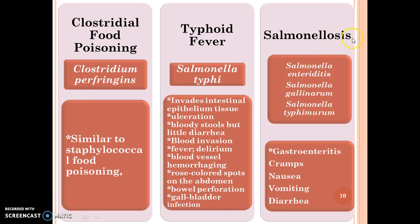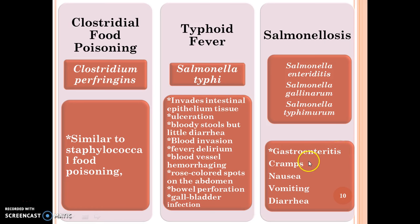Salmonellosis is caused by different species of Salmonella: Salmonella enteritidis, Salmonella gallinarum, Salmonella typhimurium. The symptoms are gastroenteritis, cramps, nausea, vomiting and diarrhea.